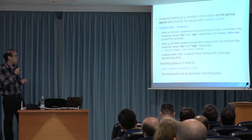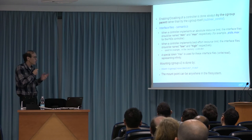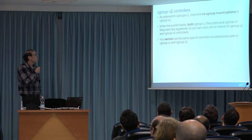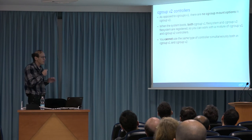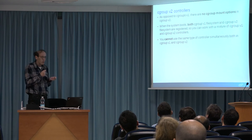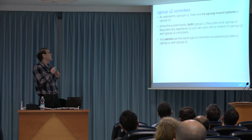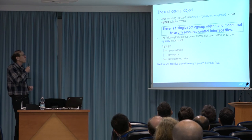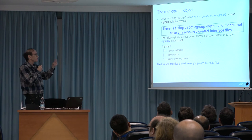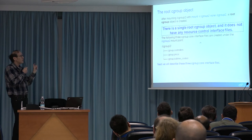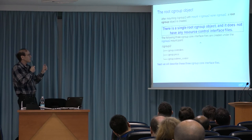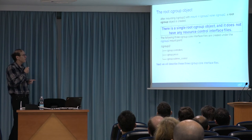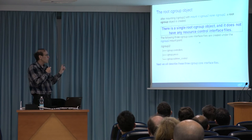Mounting Cgroup V2 is done the same way as Cgroup V1. The only difference is that the file system here is cgroup2, which is a new implementation. It can be mounted everywhere in the file system. Here we do not have any mount options. Enabling controllers is done in a different way. When you boot the system, both V1 and V2 are enabled. After mounting the Cgroup V2 file system, a root object is created and three interface files are automatically generated: cgroup.controllers, cgroup.procs, and cgroup.subtree_control. Together with cgroup.events, which appears only in subgroups, they form the V2 hierarchy — also called the default hierarchy internally.